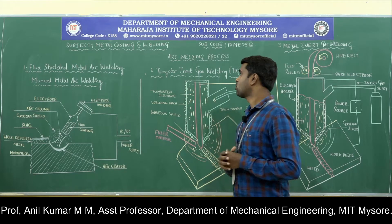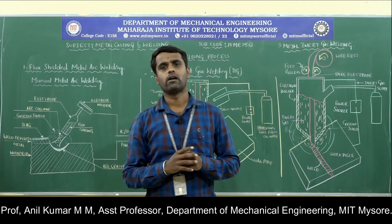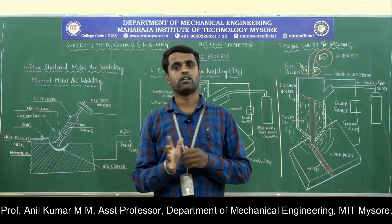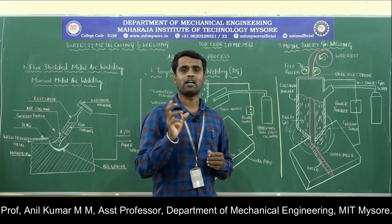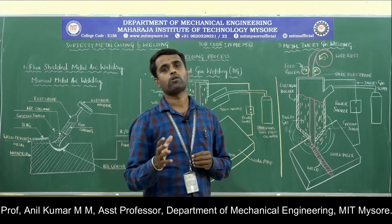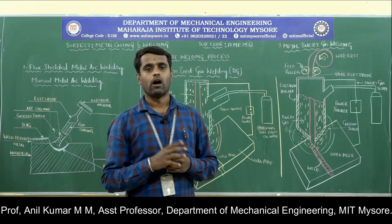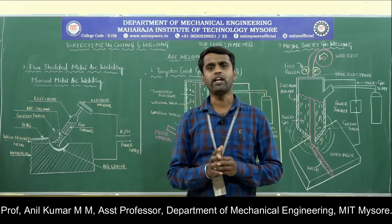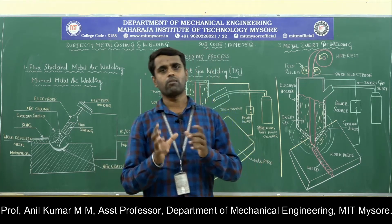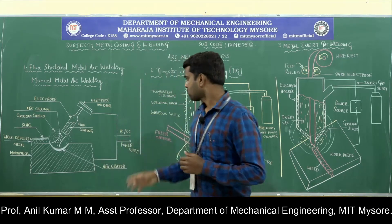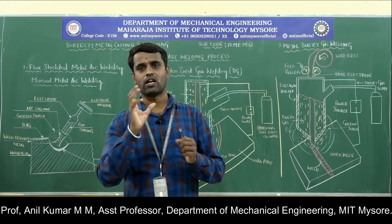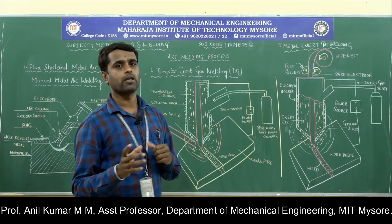Generally, in the electric arc welding process, the high intensity of the electric arc is generated by the flow of electric current. That electric arc temperature is very high, and that high temperature melts the edges of the two metal pieces, and upon cooling we will get a strong solid joint. The heat source is the electric arc, which is nothing but electrical discharge — a continuous stream of electrons emitted between two electrically conducting materials: the electrode and the workpiece.